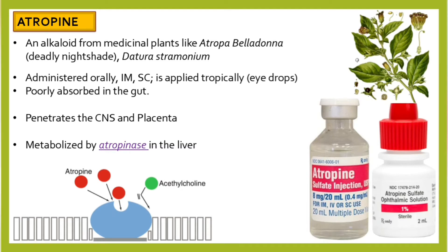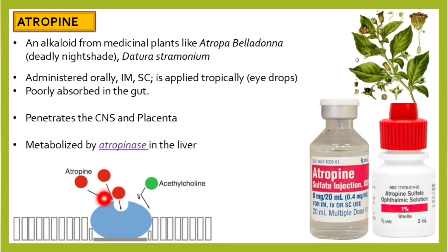This is the basic mechanism of atropine and other M-cholinergic blockers. Shown in blue is the muscarinic receptor of any type, because atropine is non-selective. Acetylcholine normally binds to this receptor and triggers intracellular pathways that stimulate parasympathetic activity. With atropine, there is competitive inhibition — atropine binds to the active site so that no intracellular receptor pathway is triggered.